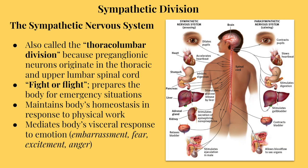The sympathetic nervous system is also called the thoracolumbar division, due to its nerves originating in the thoracic and upper lumbar regions of the spinal cord. It's also called fight or flight because it gets the body prepared for emergency situations — for instance, if there is an attacker, will you fight or run away? The sympathetic division also functions to keep the body balanced during times of intense physical work, such as exercising.